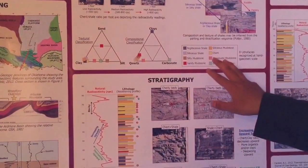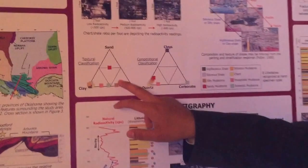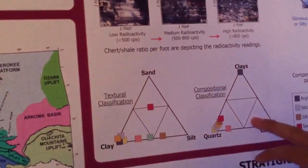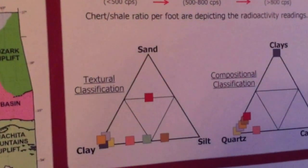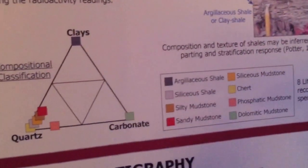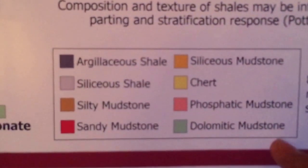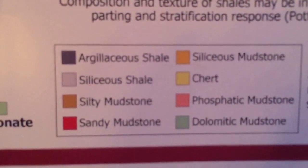These lithofacies were classified on textural and compositional ternary diagrams. We recognize that the argillaceous shale and the siliceous shale are our soft or ductile rocks and the other lithofacies are our brittle or hard lithologies.